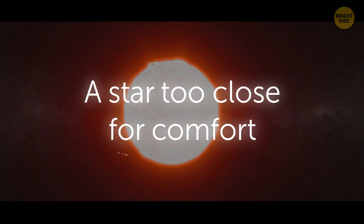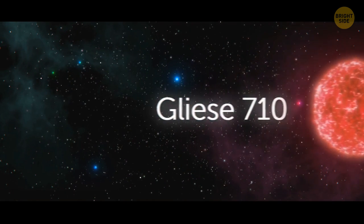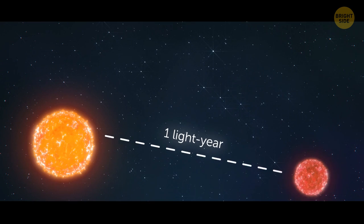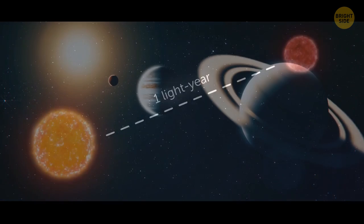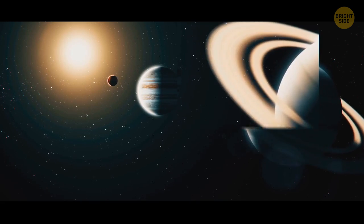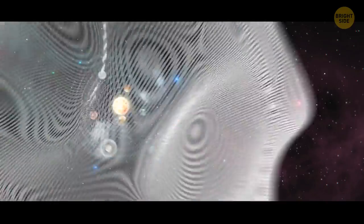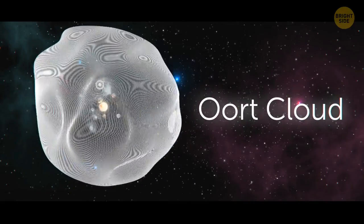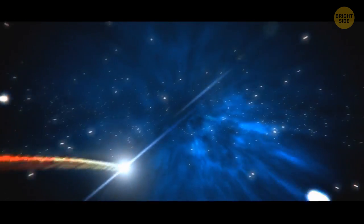A star too close for comfort. The rogue Gliese 710 star is approaching our solar system, and it will get just one light-year away in 1.3 million years. This won't have a major impact on the planets, but it could disturb the so-called Oort cloud, which surrounds our solar system and is full of comets. From Earth, the star will look like the brightest planets we see now, and we'll see many more comets in the skies.